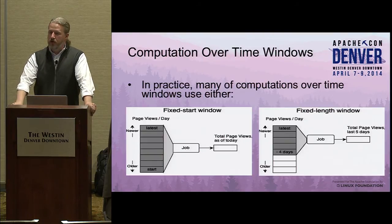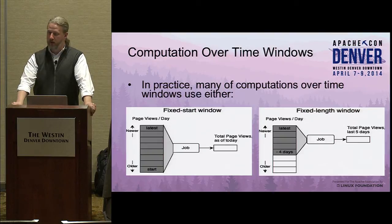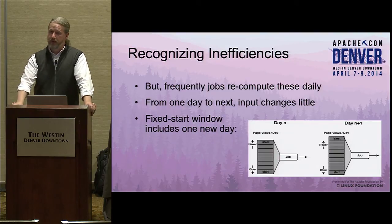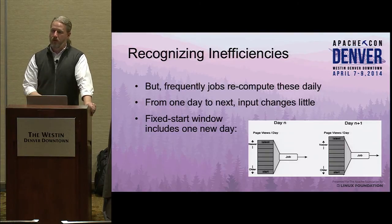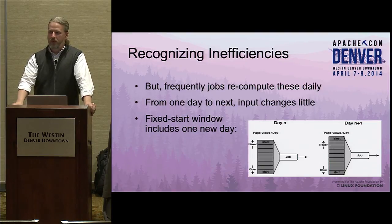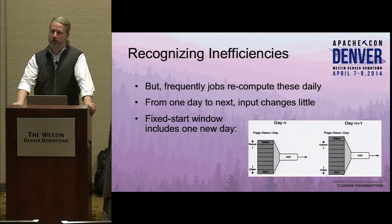Most of these computations generally take one of two forms. They're either a fixed start window — I began producing data on this day and I want to consider everything going forward — or they're a fixed window length, such as I want to consider the last 30 days of data. The easiest way to deal with this, especially if you're using Pig, is to just recompute all this data daily. You say load all the data, or load the last 30 days, and you do a group and a count — a really standard operation. But from day to day, your input's not changing very much. One day has changed; 29 days are still the same. So you're being fairly inefficient. If you add this up over a bunch of different jobs, for a bunch of groups, for a bunch of topics, it can put a lot more load on your cluster than you actually need.